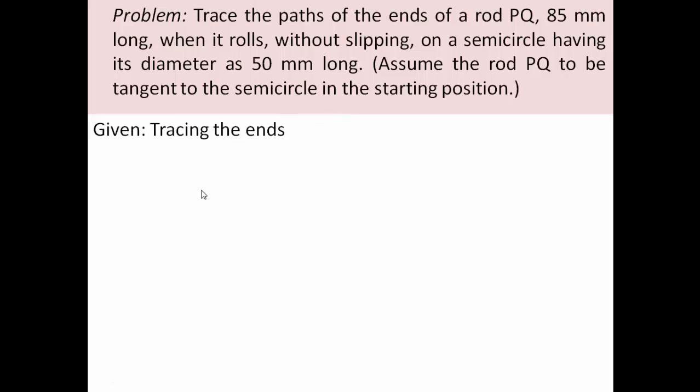We have to trace the endpoints of a rod whose length has been given to us as 85 millimeters. There is this semicircle whose diameter has been given to us as 50 millimeters. If you work out the circumference of the semicircle, it's going to work out as πd/2, and it's going to be equal to 78.5.